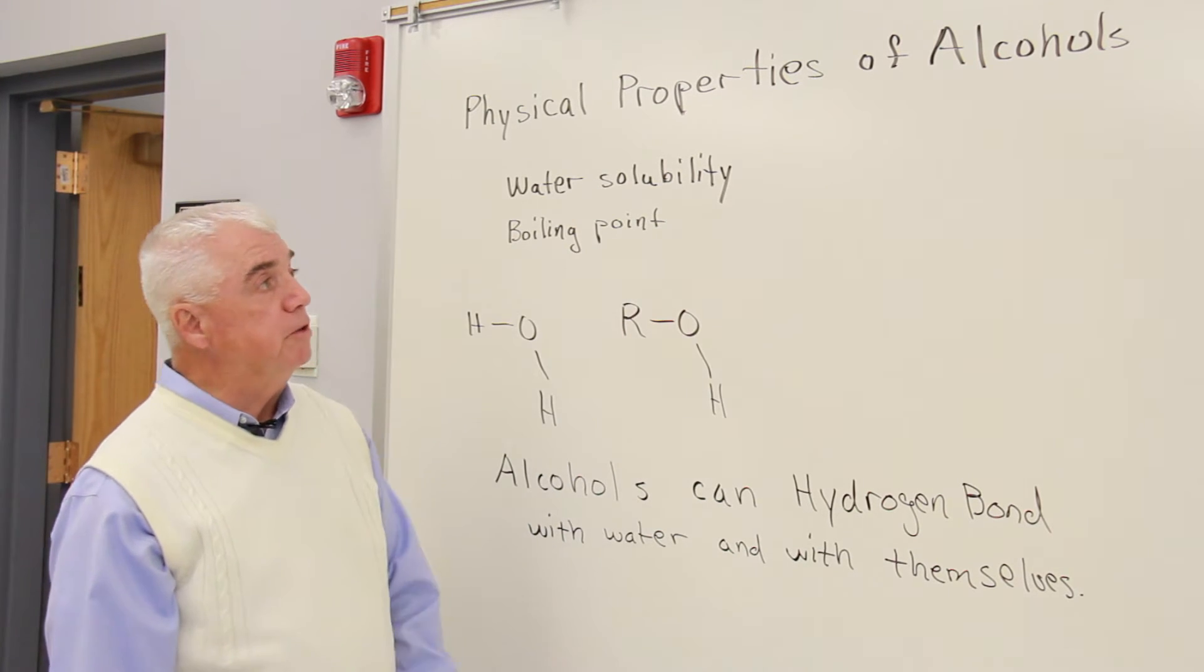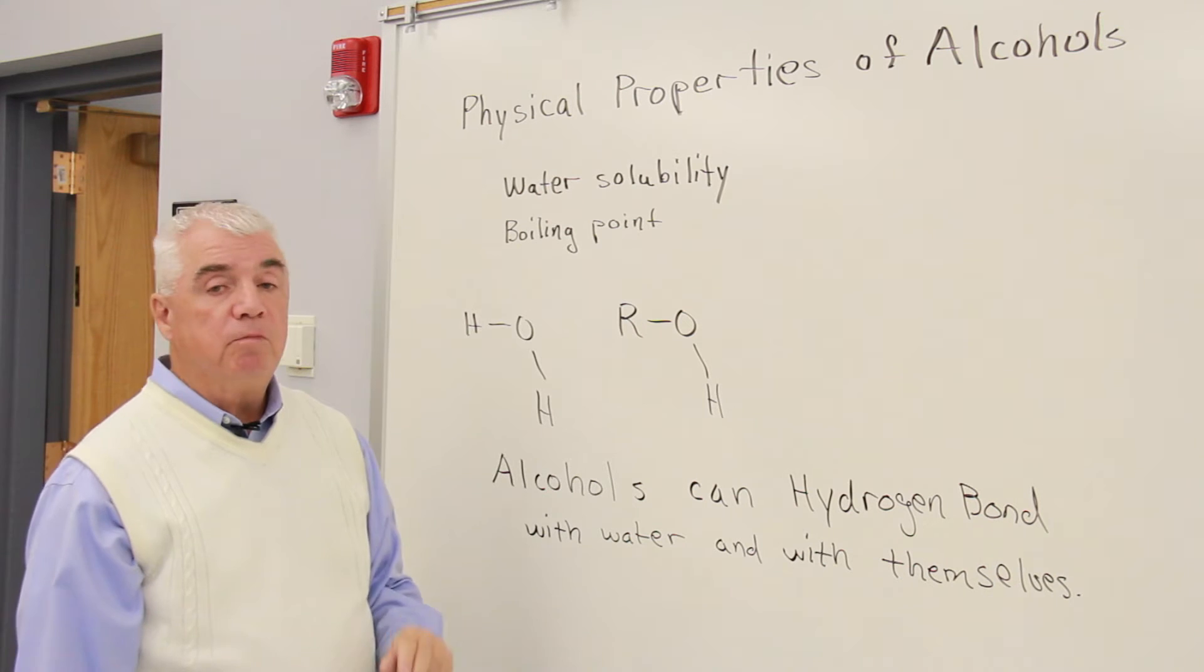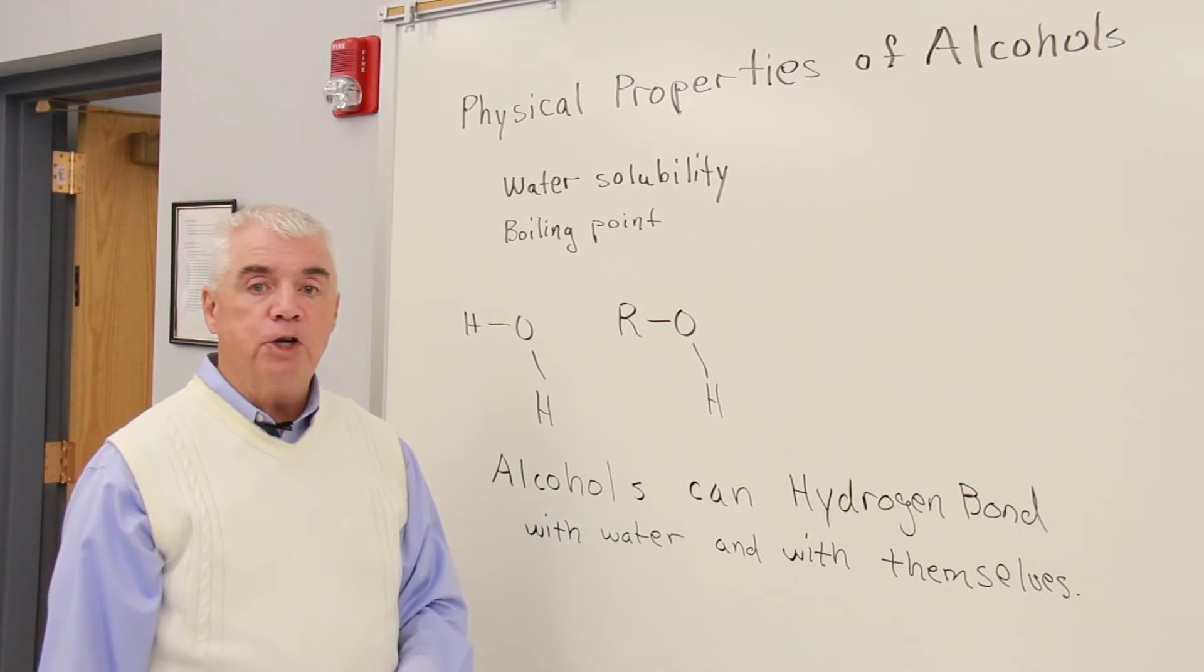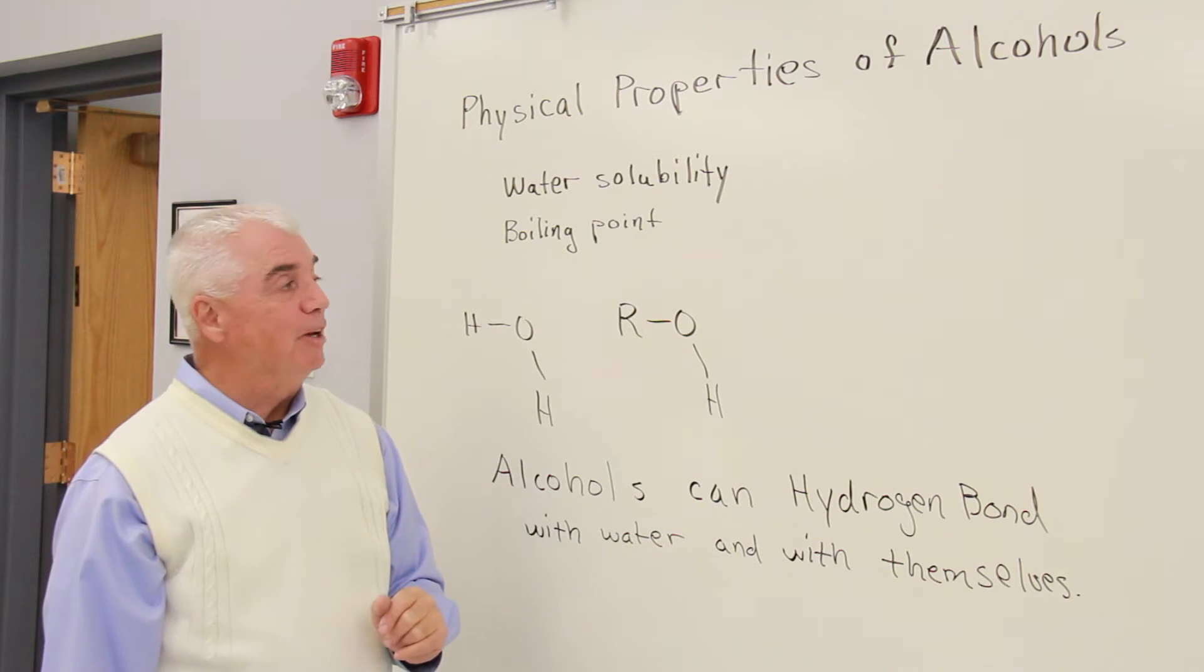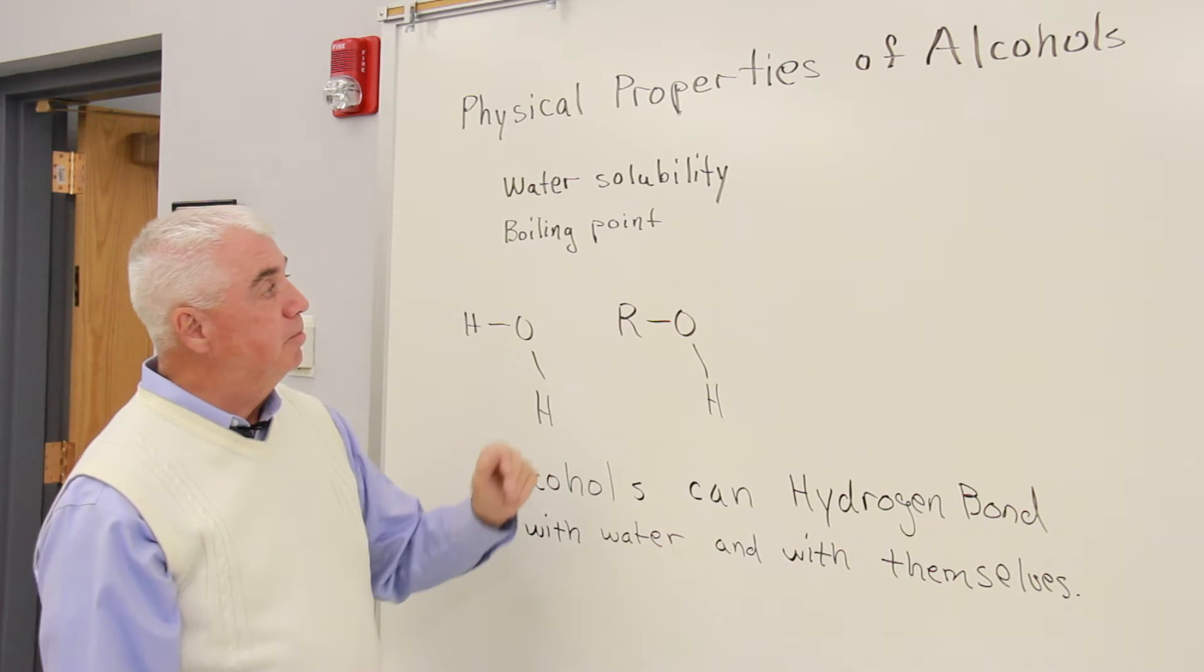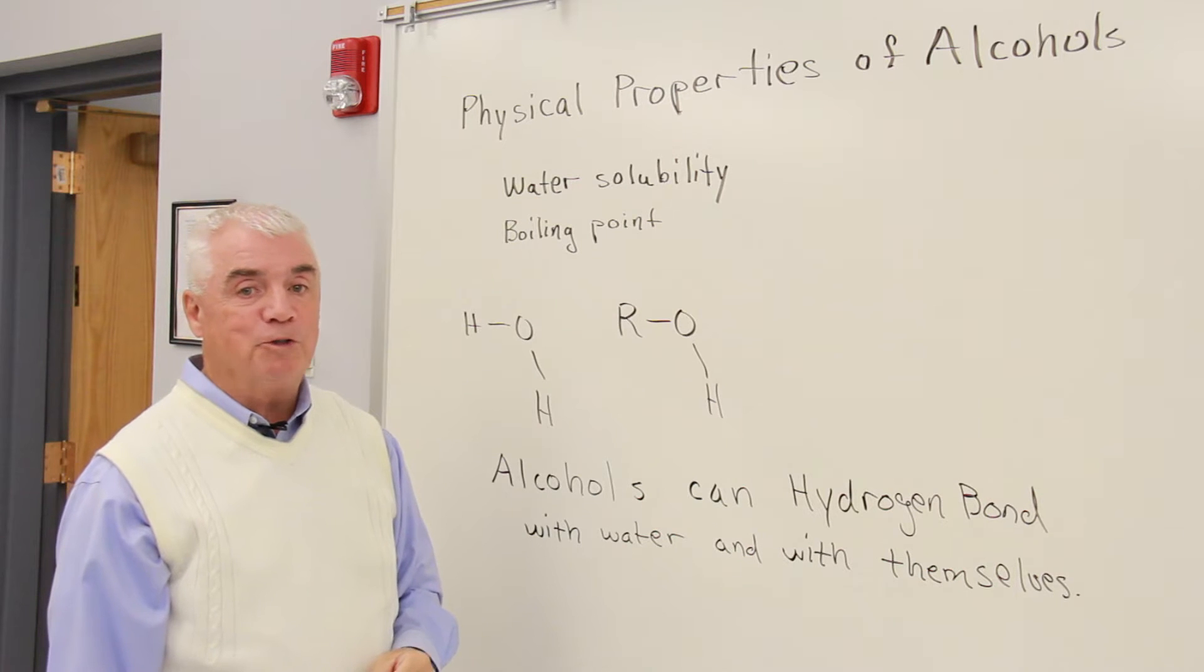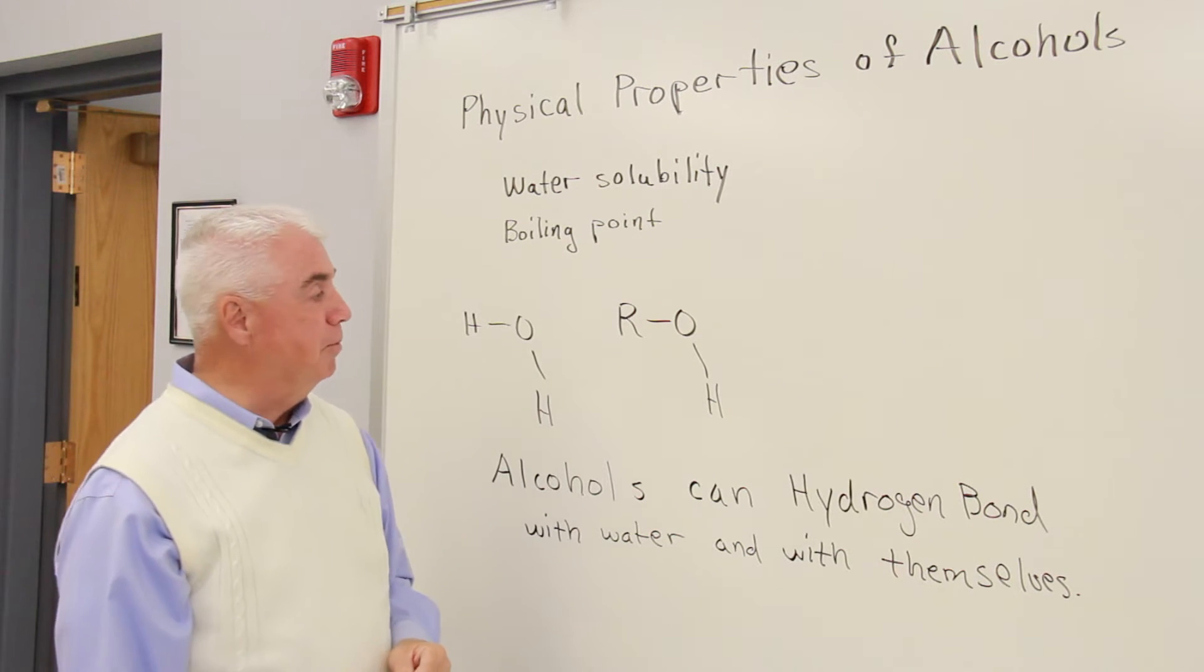When we look at the properties of a certain functional class of organic compounds, we're concerned about chemical properties, and those are reactions—an alcohol changing into something else. When we talk about physical properties, these are changes or characteristics that don't involve changes in composition. Typically, we're interested in water solubility, boiling point, and once in a while melting points.